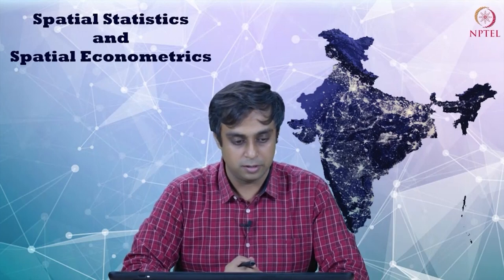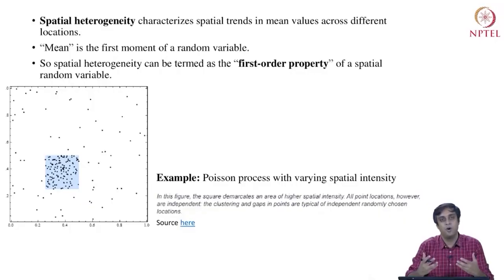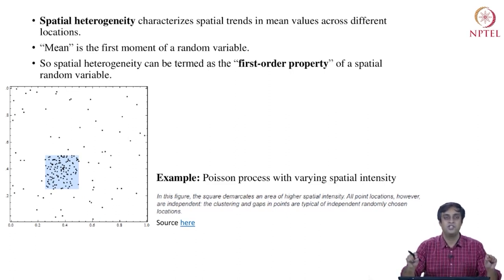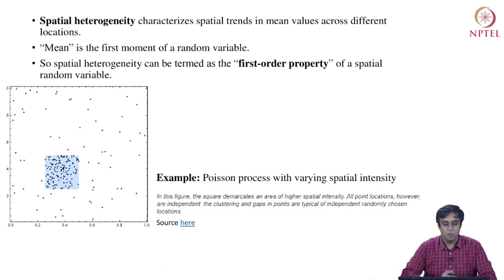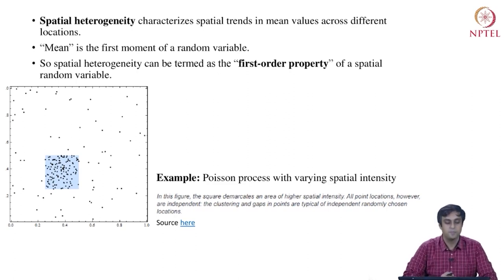Spatial heterogeneity characterizes spatial trends in mean values across different locations in space. When we talk about mean values, mean is the first moment of a random variable. So we are viewing the world as if the events happening are random events — that is how statistics enters the domain of understanding real-world happenings. Spatial heterogeneity is about how different the average intensity of events is across space, and can be termed as the first-order property of spatial random variables.